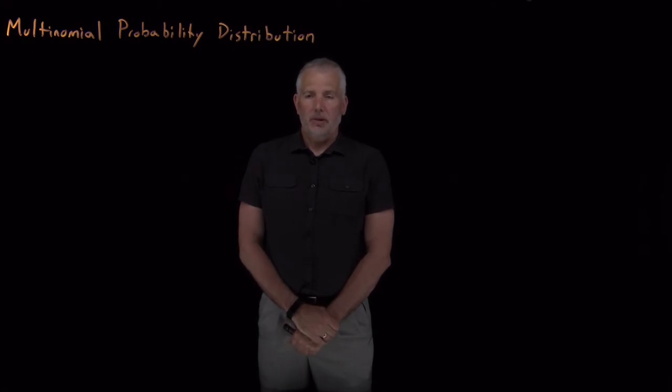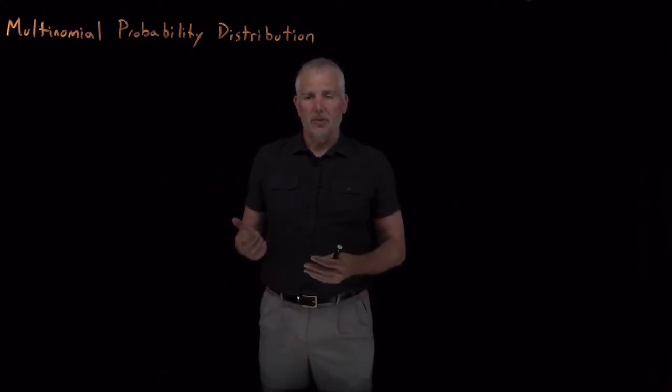Alright, we've seen with the binomial probability distribution that that's useful for calculating the probability of some number of events happening when there's only two options, maybe A and B, or heads and tails, or spin up and spin down.